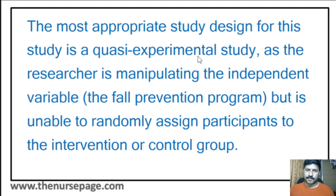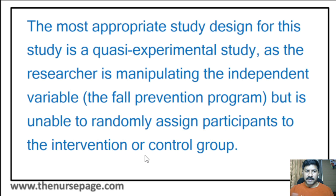The researcher is manipulating the independent variable — the fall prevention program was there but is being updated to a newer one. However, the researcher is unable to randomly assign participants to intervention or control groups because the sample group is the older adults in that particular nursing home. Only the independent variable, the fall prevention program, is being changed.